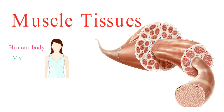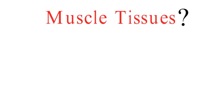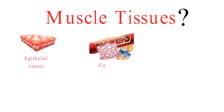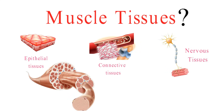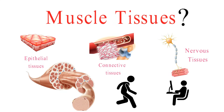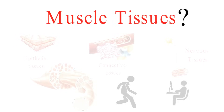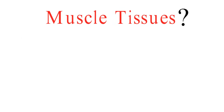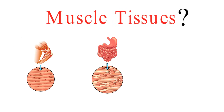Our bodies are incredible machines, and muscle tissues play a pivotal role in making them work. What exactly are muscle tissues? They're one of the four primary types of tissues in our bodies, along with epithelial, connective, and nervous tissues. Muscle tissues are unique because they allow us to move, maintain posture, and perform various functions. There are three main types of muscle tissue: skeletal, smooth, and cardiac.